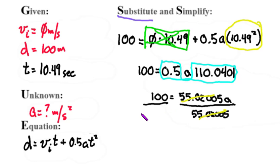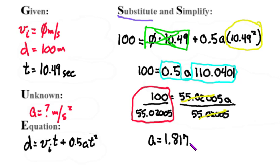And then finally, when I do the math in the red circle, I get a final answer: acceleration equals 1.81752 meters per second squared.